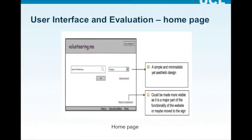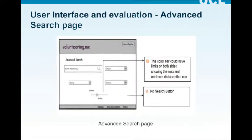However, the register and organization link at the bottom right of the page could be made more visible, as it is a major part of the overall functionality. Next is the advanced search page. There are two issues with this page. The first one is that there is no search button. The second is that the scroll bar could have limits on maximum and minimum distance.